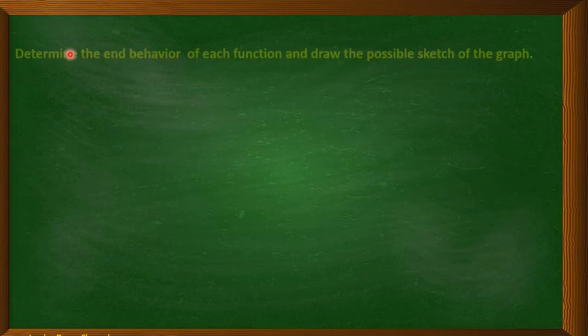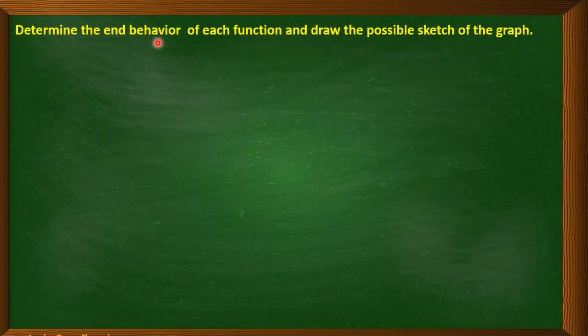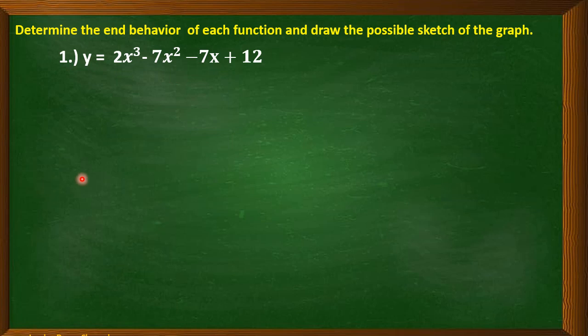Let's have the first example where we determine the end behavior and draw the possible sketch of the graph. We're not drawing it in the Cartesian coordinate plane — just a possible sketch. In my next video, we'll draw it in the Cartesian coordinate plane. So for example, we have y = 2x³ - 7x² - 7x + 12.